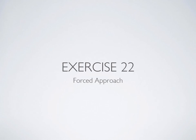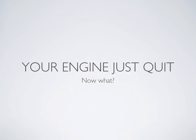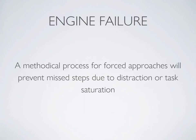Welcome to the ground instruction for exercise 22 in the flight training manual on the forced approach. A forced approach is exactly that — you're being forced to make an approach and landing on a field because of some emergency situation. We train for these to give you a methodical process to prevent missed steps due to distraction or task saturation.